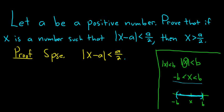So in the proof, we can drop the absolute value, and then we end up with negative a over 2 less than x minus a less than a over 2.